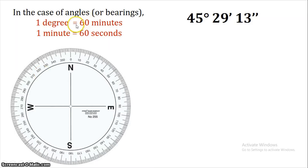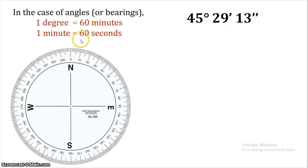Now we will study the degree-minute-second system. What is a degree? You can do the divisions: 1 degree is equal to 60 minutes, and 1 minute is equal to 60 seconds. As we use length measurements, we use degrees, minutes, and seconds.